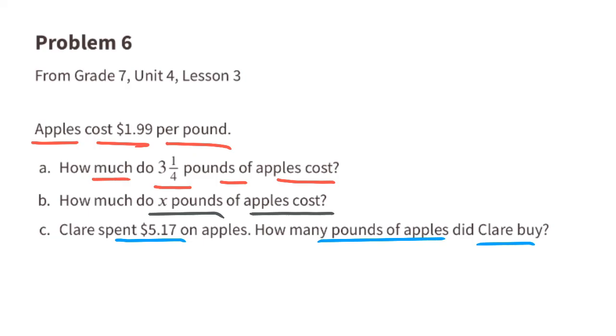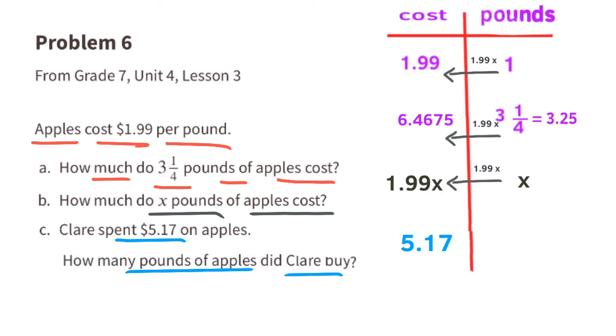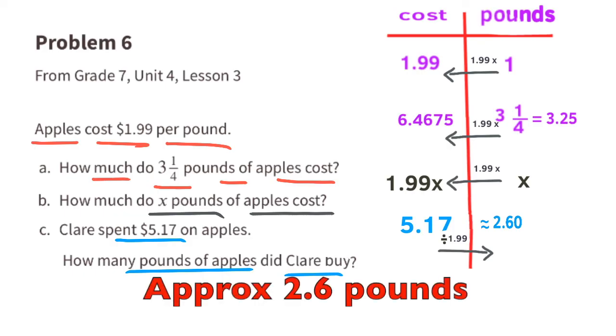C. Claire spent $5.17 on apples. How many pounds of apples did Claire buy? $5.17 divided by $1.99 equals approximately 2.6. So Claire was able to buy approximately 2.6 pounds of apples.